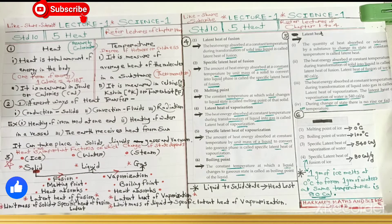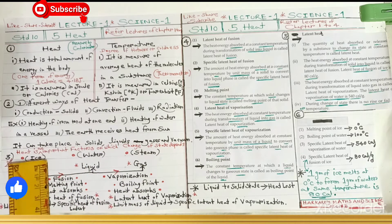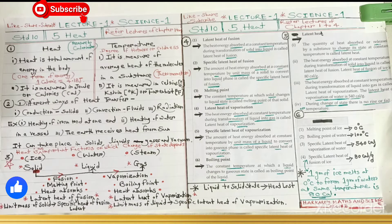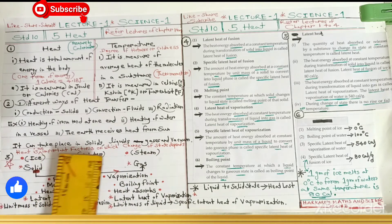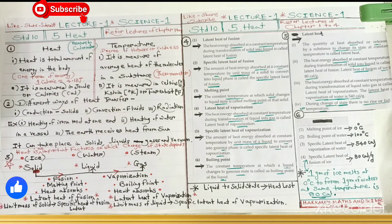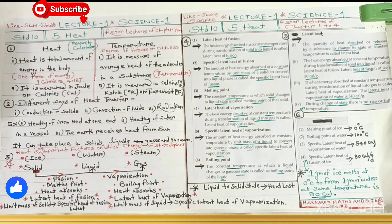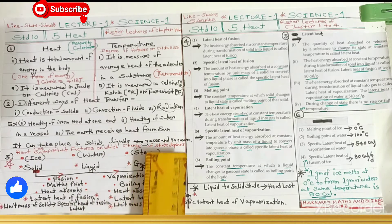There are three states of matter: solid, liquid, and gas. Heat is one important factor on which change of state depends. Example: solid — ice, liquid — water, gas — steam. If asked about the importance of heat, state that heat is one important factor on which change of state depends.